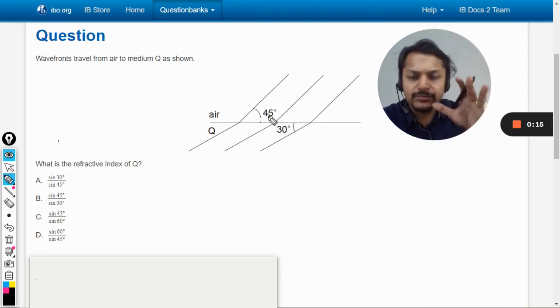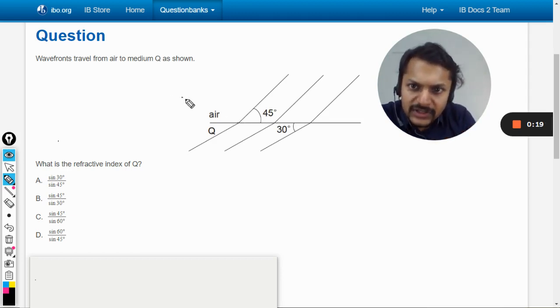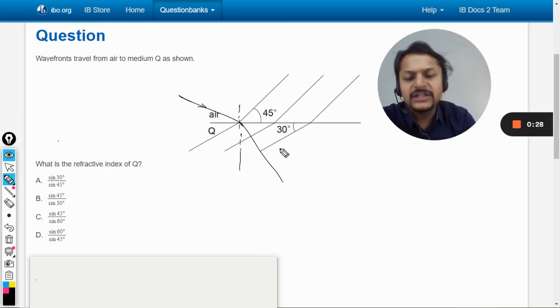Now we know that ray is perpendicular to the wavefront, like it is 90 degrees. So the light should be like this and it would be going like this. So this is what is actually happening here. These are the wavefronts.